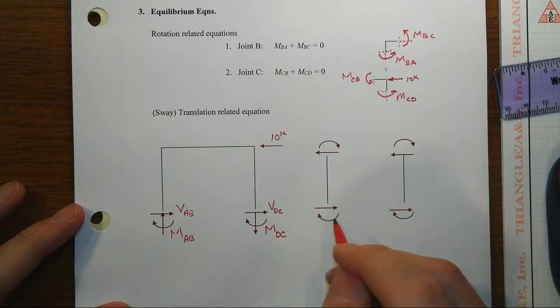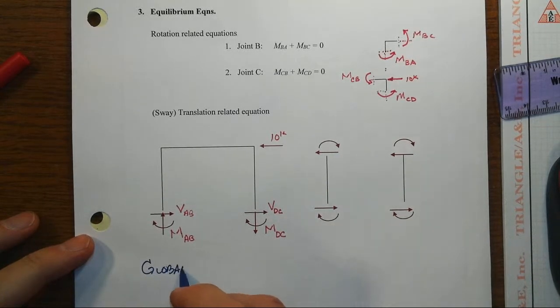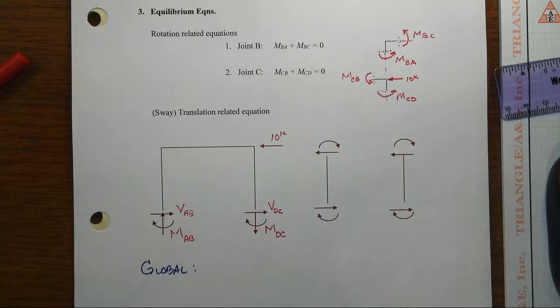Let's go ahead and just do the global equation and what we can get out of it. For the global, then, just directly writing this, it's easy to see that sum of forces in the X direction.